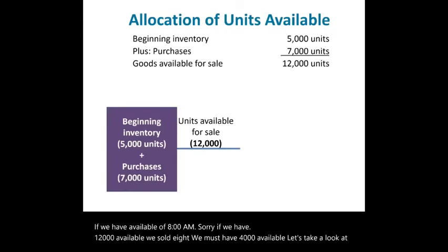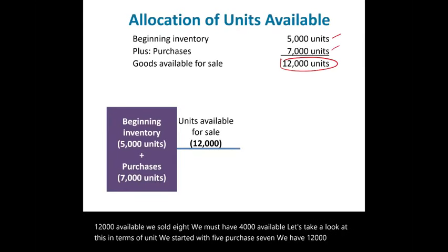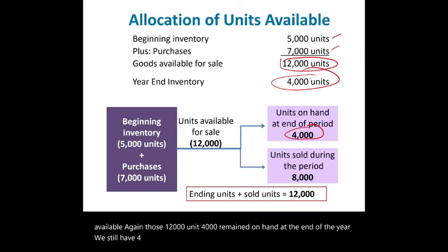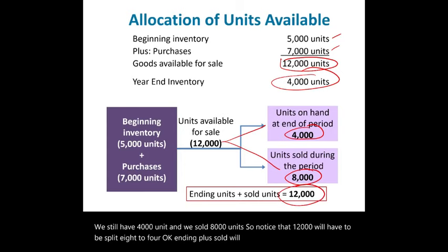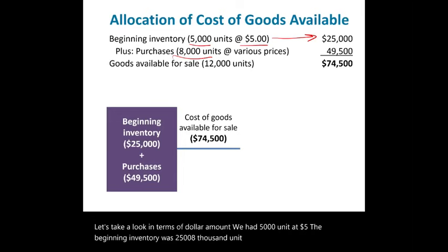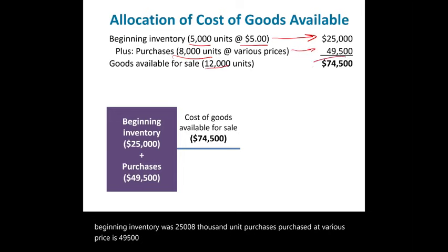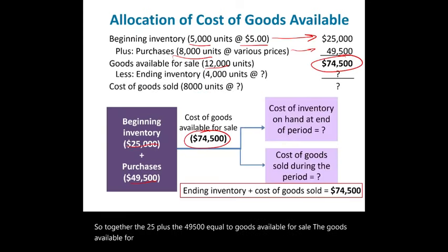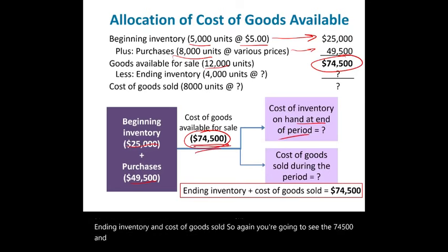In terms of units: we started with 5,000, purchased 7,000, have 12,000 available — 4,000 remain on hand and 8,000 were sold. In terms of dollars: beginning inventory $25,000 plus purchases of $49,500 equals goods available for sale of $74,500. The $74,500 must be split between ending inventory and cost of goods sold.